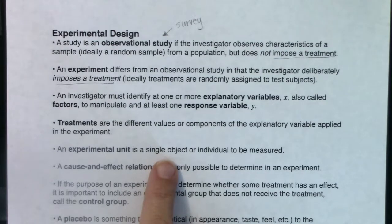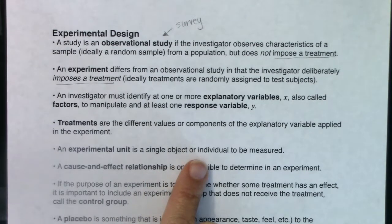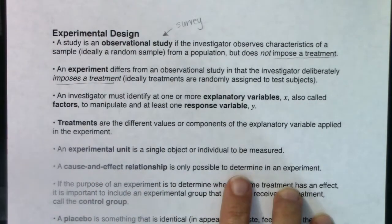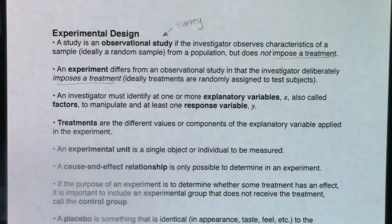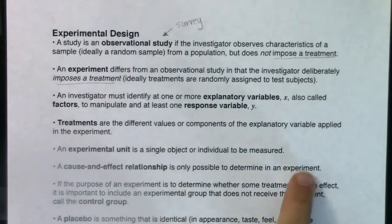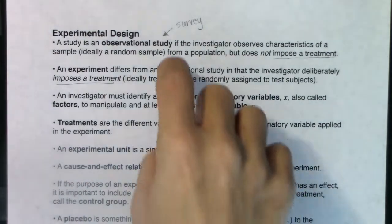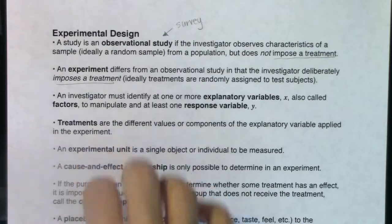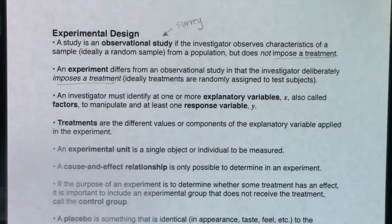An experimental unit is a single object or individual to be measured. A cause-and-effect relationship in the stats world is only possible when we're running an experiment. You might hear the phrase 'correlation is not causation.' Cause and effect requires running an experiment — so when we do surveys and observational studies, we can't officially say it's a cause-and-effect relationship.